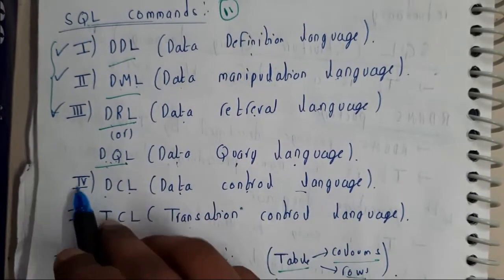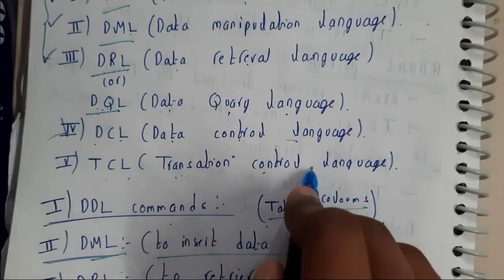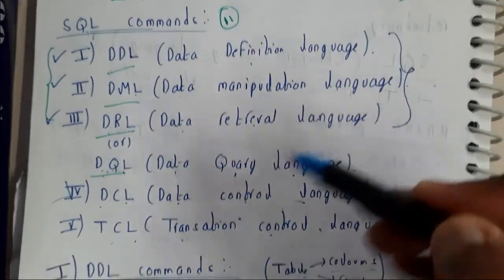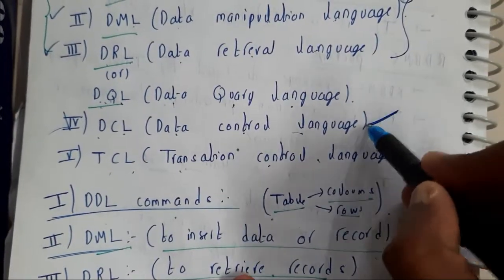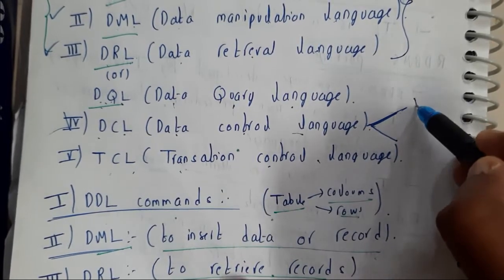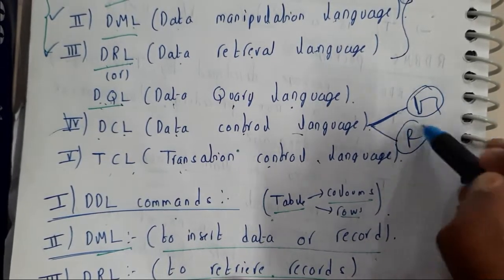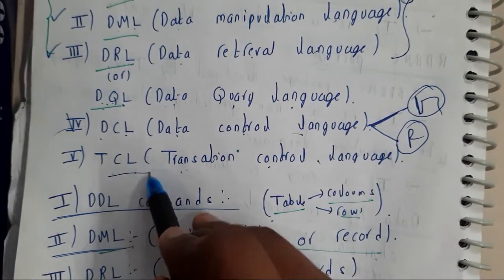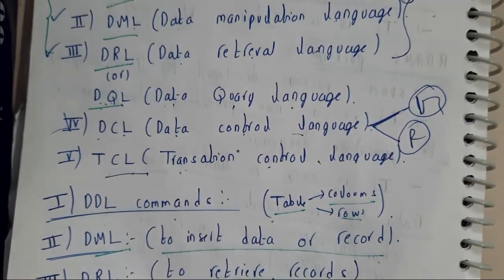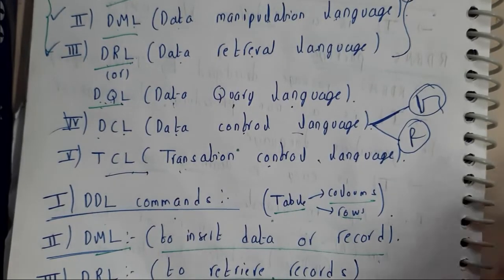DCL is nothing but Data Control Language — here we'll be controlling things. TCL is nothing but Transaction Control Language. In the next tutorials we'll be going through the first three, and after some tutorials we'll be going through DCL. These controls are nothing but Grant and Revoke — granting permissions and removing permissions. Transactions we'll be discussing in a separate whole chapter.